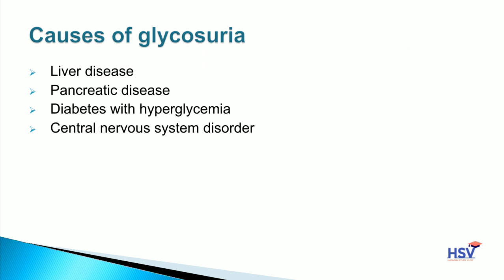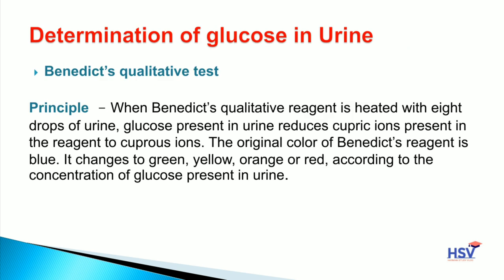The causes of glycosuria are: first, liver disease; second, pancreatic disease; third, diabetes with hyperglycemia; and fourth, central nervous system disorder. These are the causes of glycosuria. हम कैसे determine कर पाते हैं कि glucose urine में present है या नहीं — इसके लिए Benedict qualitative test है।